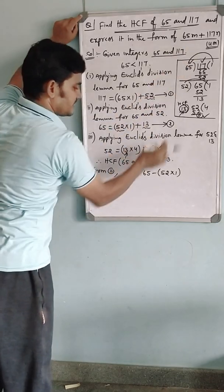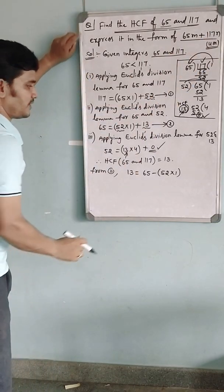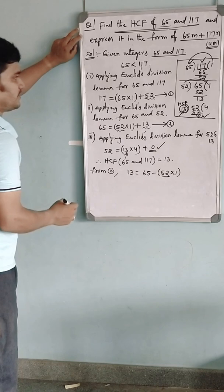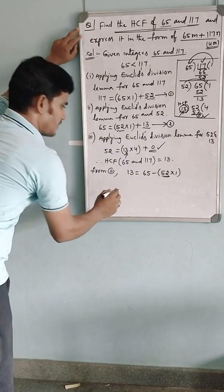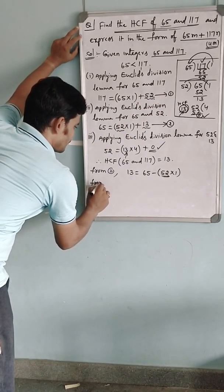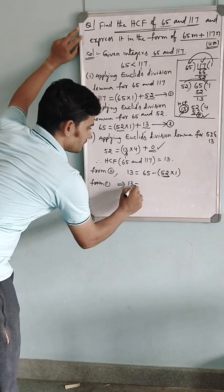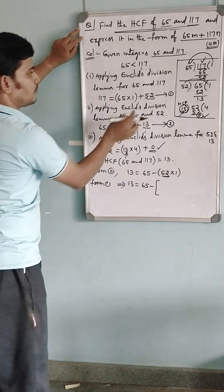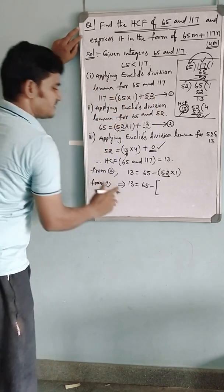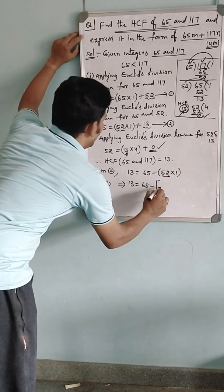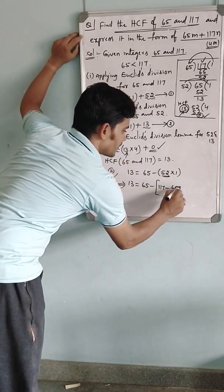We still have only 65 here; we must not use 52 because we need to express everything in terms of 117. We have to eliminate 52. From equation 1, 52 can be expressed as 117 minus 65 into 1. So instead of 52, I will write 117 minus 65 into 1.